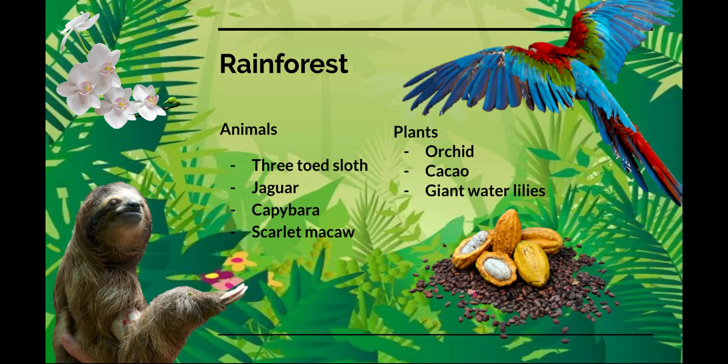Rainforests are a kind of forest habitat. They are found in warm places and are full of many tall trees and leafy plants. It's called a rainforest because it gets a lot of rain every year, helping all the plants grow. Trees in the rainforest grow very tall because they have to compete with other plants for sunlight. Kapok trees can grow up to 200 feet.